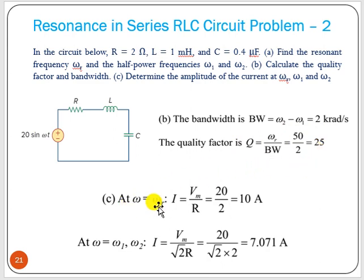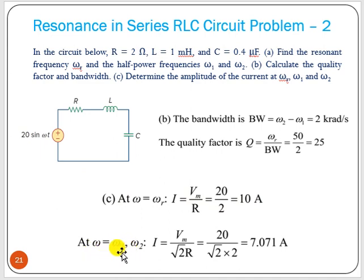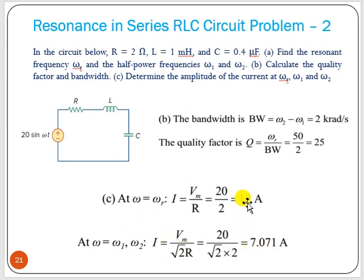At ω = ω_r, the current I equals V_max/R (maximum). At ω = ω₁ or ω₂ (half-power points), the amplitude is I = V_m/(√2 × R), which is 0.707 of the maximum. If maximum current is 10 A at resonance, it reduces to 7.07 A at the cutoff frequencies.